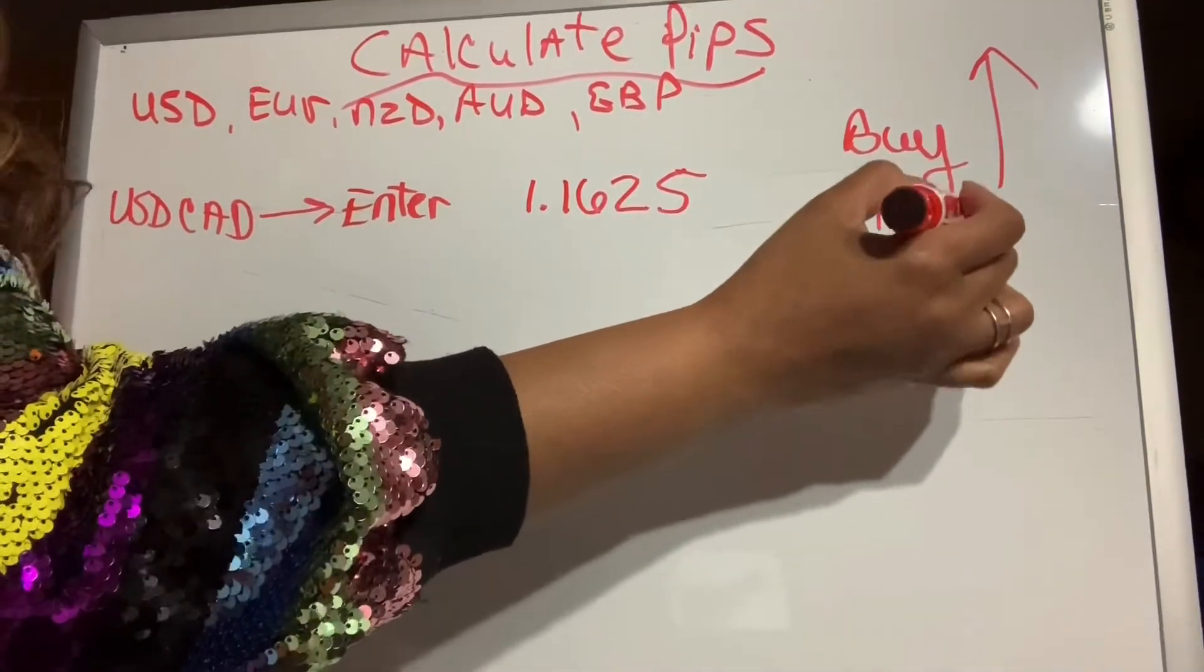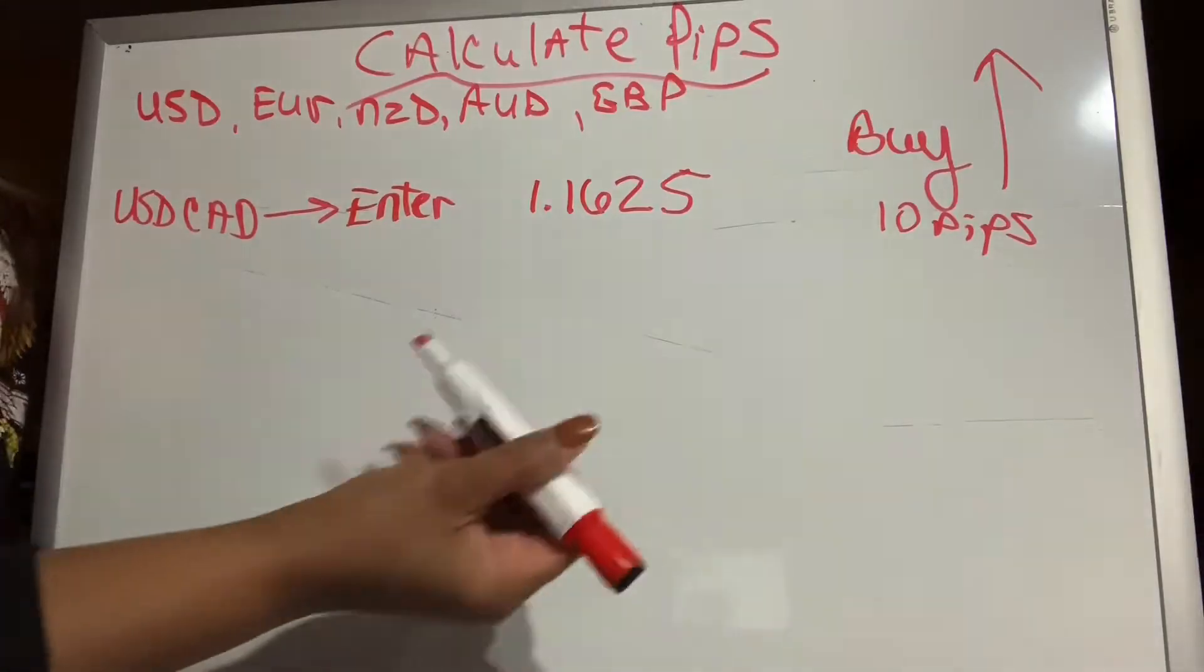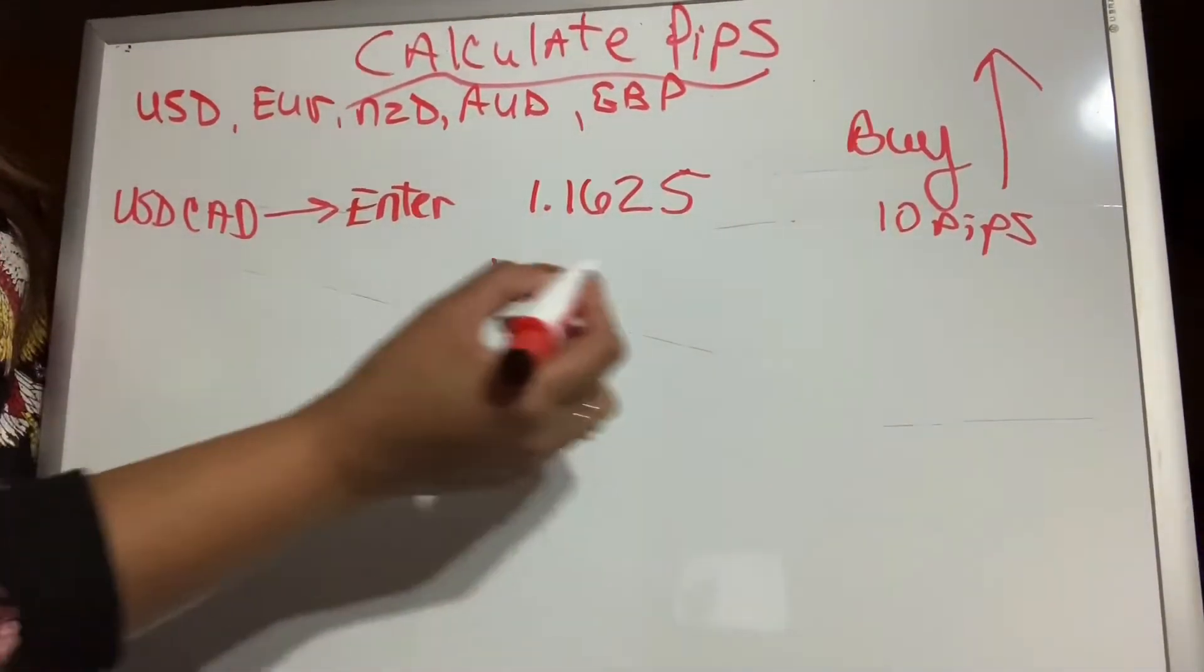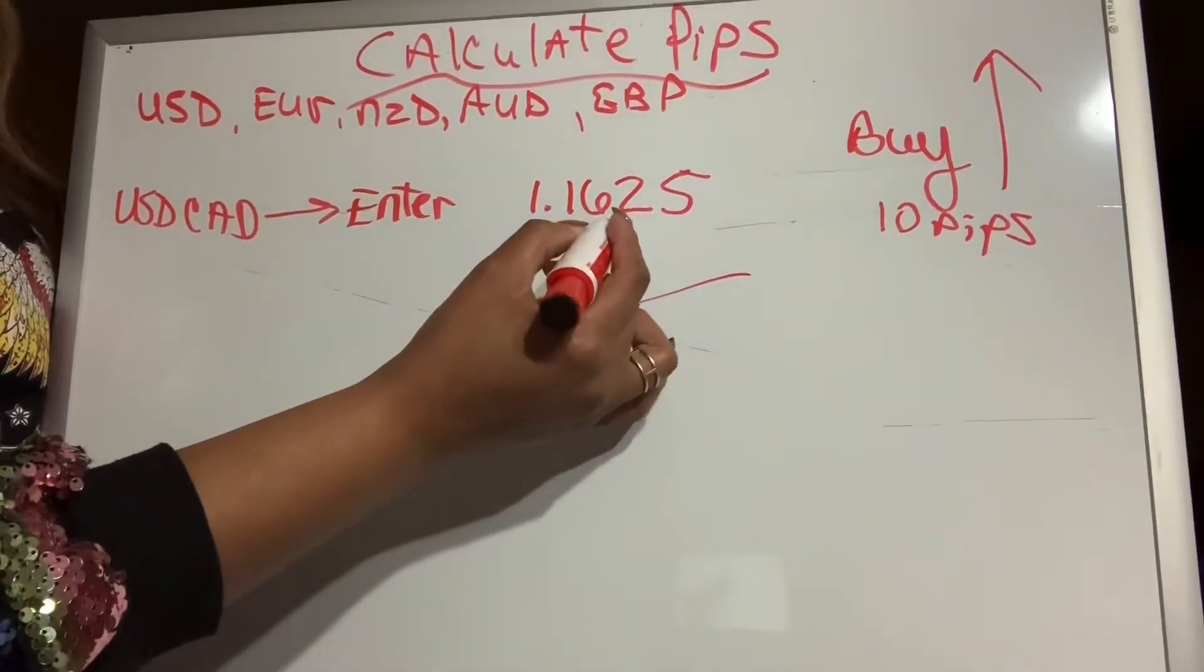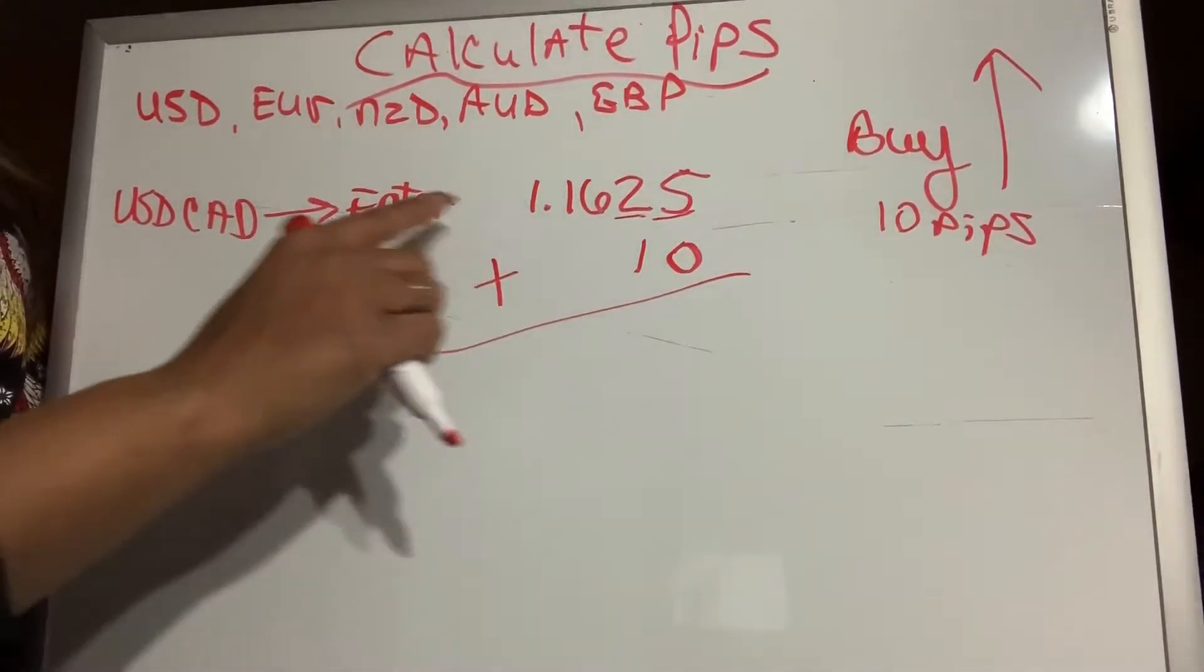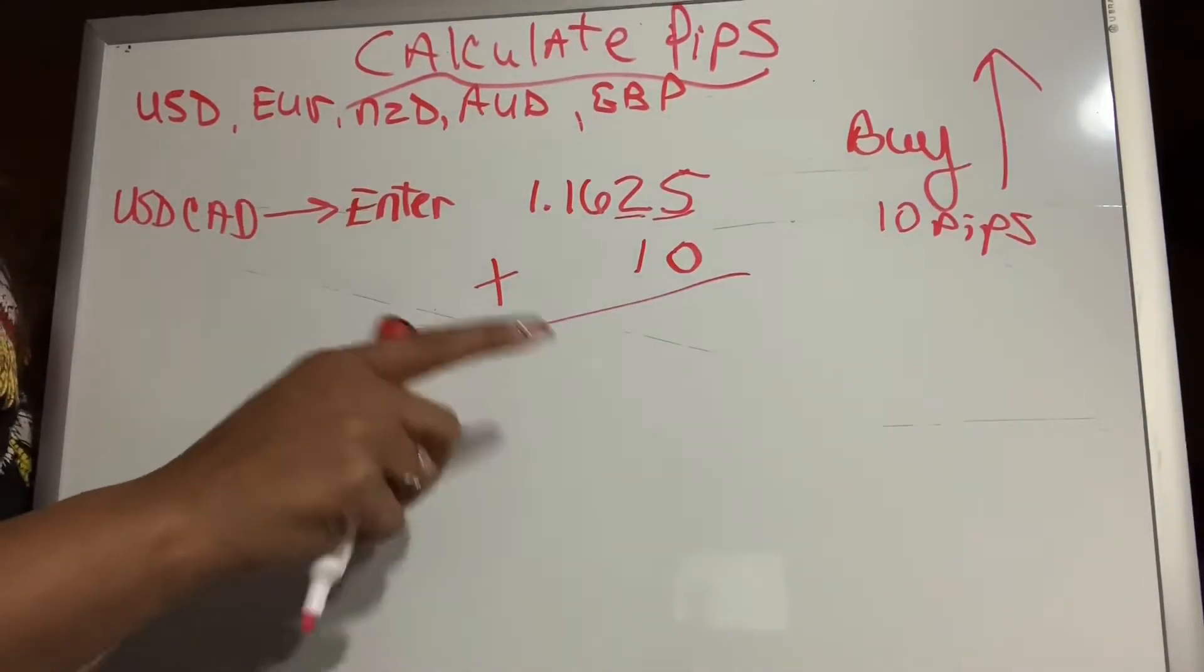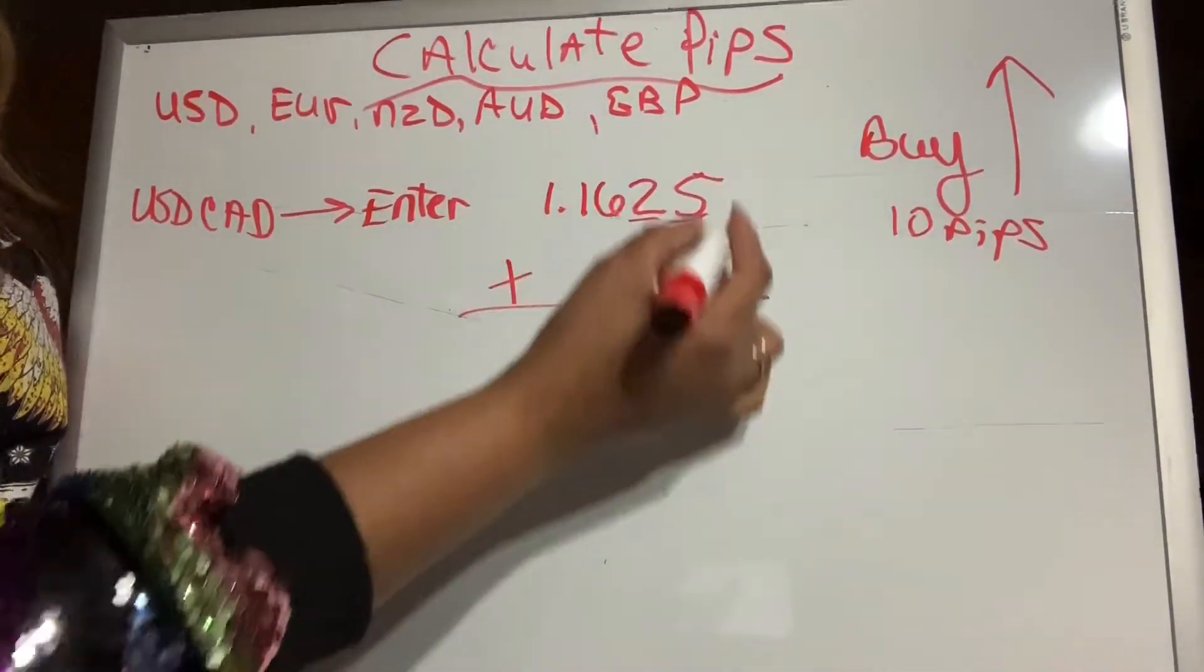You've got the PIP and the PIP back here. We're going to add the 10 PIPs to our number because we want the market to go higher because we're in a buy. Looking at the decimal, you want to go one, two, the third and fourth number is what you're going to add to add on 10 PIPs. When you're doing any currency pair like these that does not include JPY, and I'm not talking about commodities or crypto, this is how you do it.